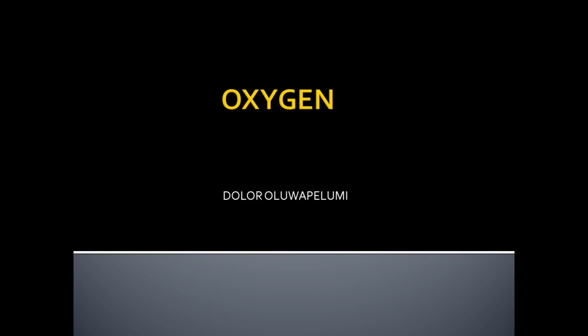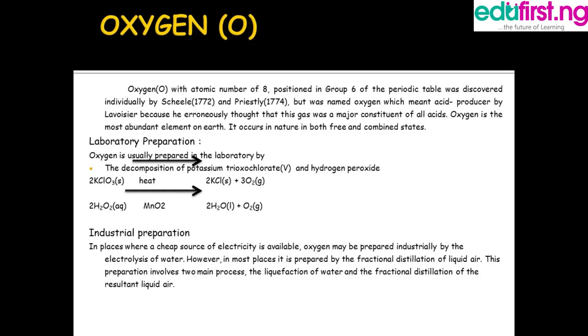Hello everyone and welcome to class. Today our topic is oxygen. Oxygen is the most abundant element on the earth's surface and it also occurs in nature both in free and combined states. As human beings, we should know that oxygen is the most abundant element on the earth's surface because we breathe in oxygen, and the plants breathe out oxygen for us to breathe it in.